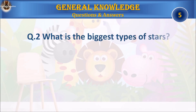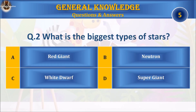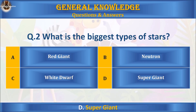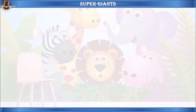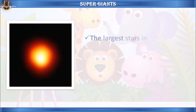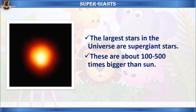Question 2. What is the biggest type of star? A. Red Giant, B. Neutron, C. White Dwarf, or D. Super Giant? Your time starts. The answer is D. Super Giant.